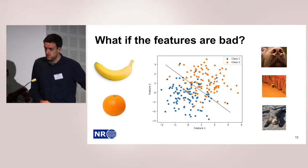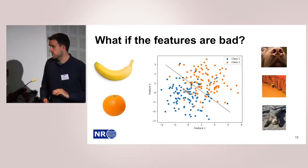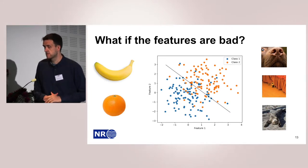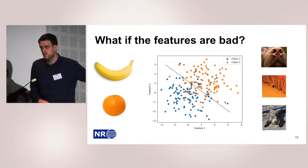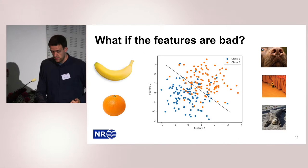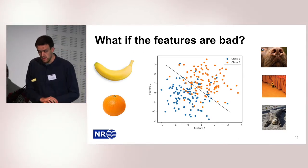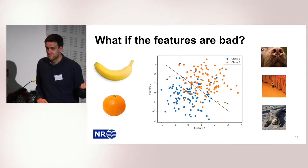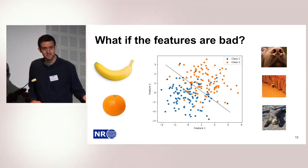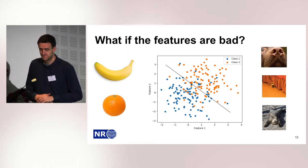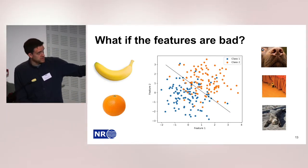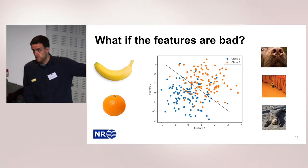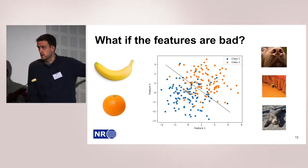If we have simple images, it's very easy to compute nice features. For instance, shape and color will be enough to separate bananas from oranges. But if the images look more complex, or if the images are seismic images, it's not that easy to compute features. The classifier is good, but the feature engineering can be a problem.